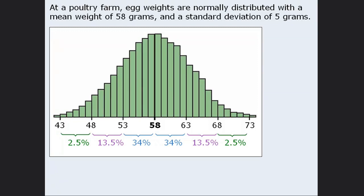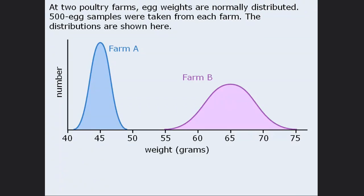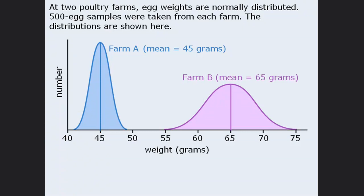Now let's examine what happens if we have different means and different standard deviations. We have two farms, and once again the egg weights are normally distributed, so we already know quite a bit about their distributions. 500 eggs are randomly sampled from each farm and their distributions are shown. At farm A, the mean egg weight is about 45 grams, and at farm B, the mean egg weight is about 65 grams.